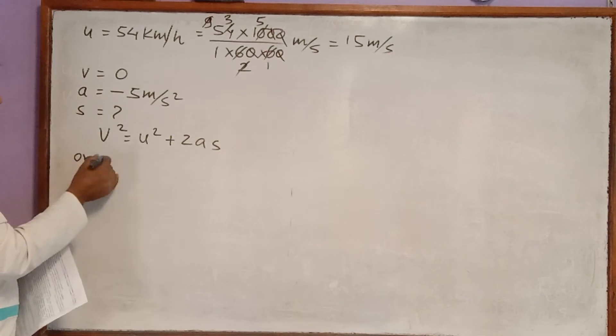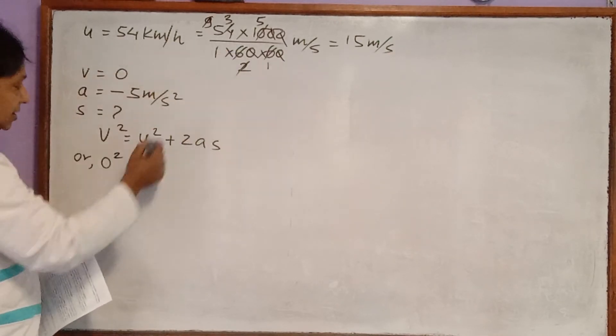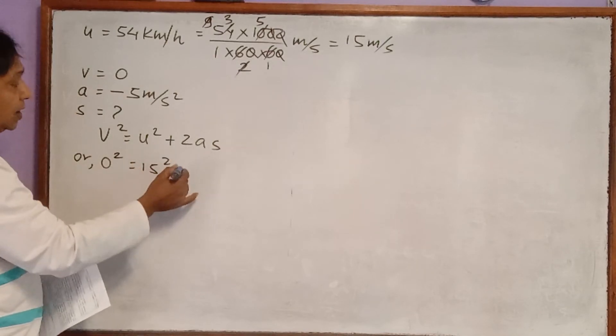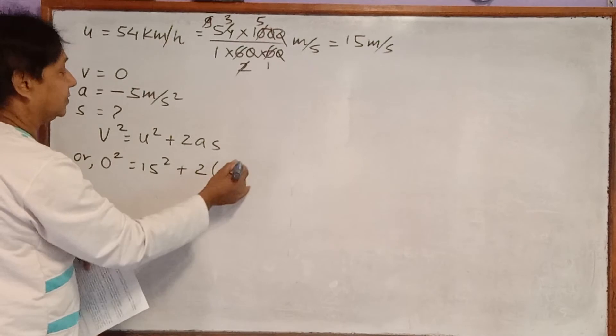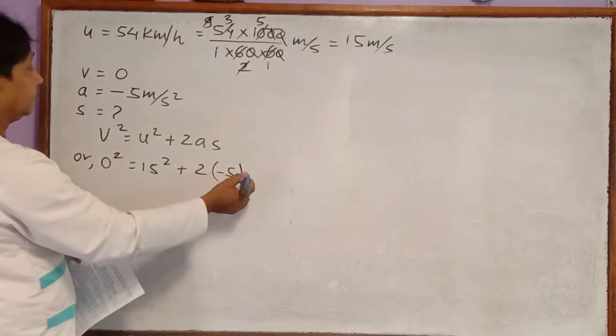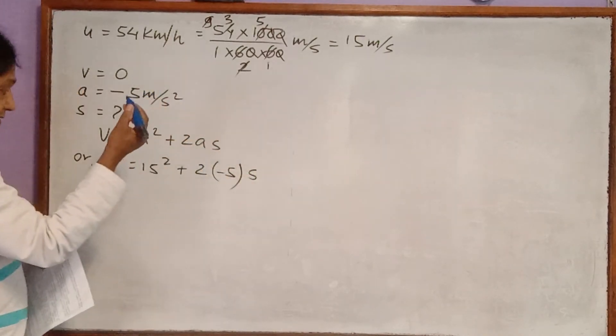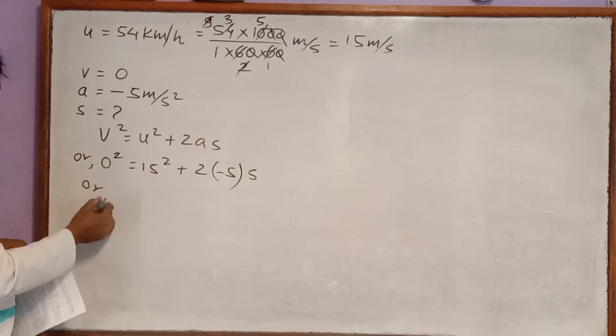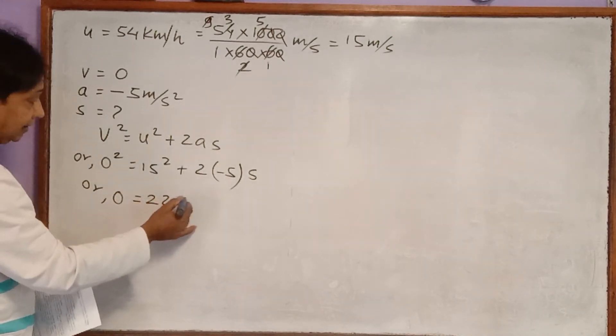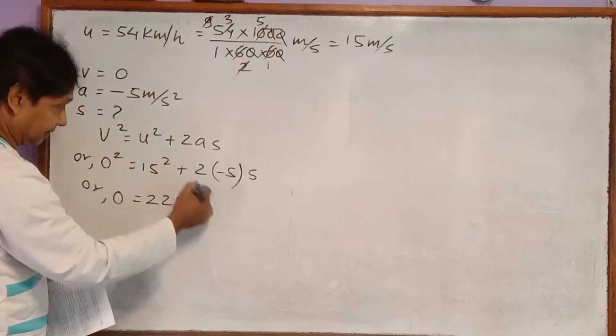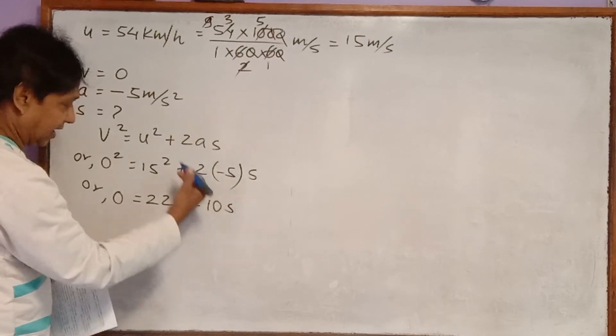v is 0. 0 square. u is 15. 15 square plus 2 remains same, acceleration minus 5. That's why I am writing in bracket. And this is s. This is equal to 0. 15 square is 225 minus 5 into 10 s.